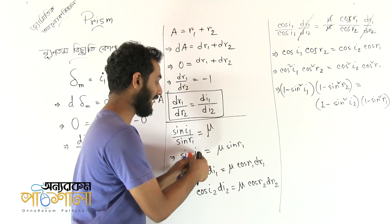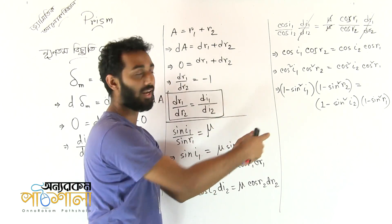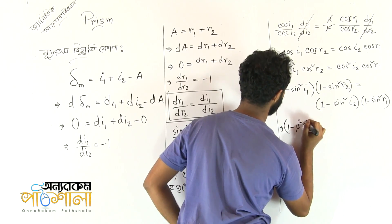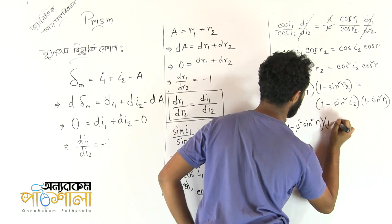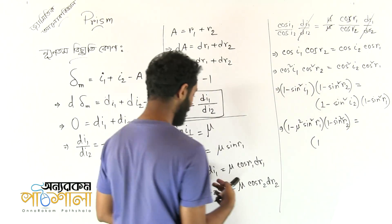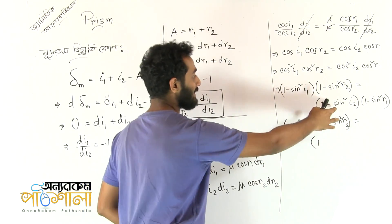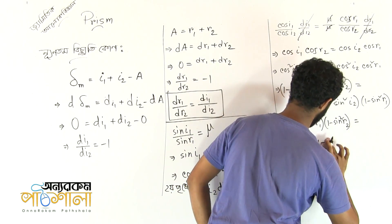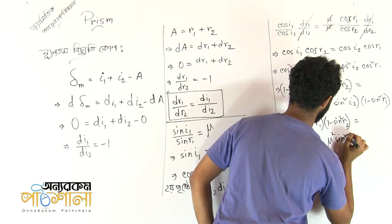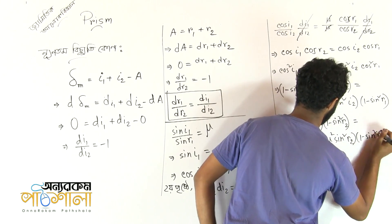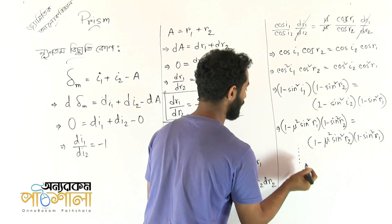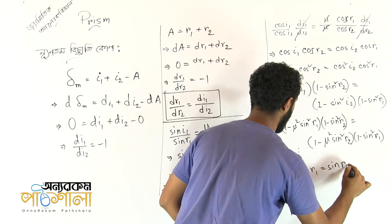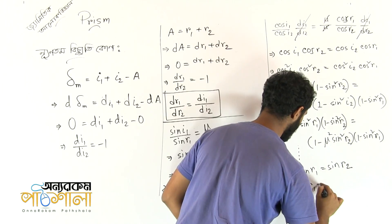So, sin²(i1) equals μ²·sin²(r1). Using this, the equation becomes: 1 minus μ²·sin²(r1) times 1 minus sin²(r2) equals 1 minus μ²·sin²(r2) times 1 minus sin²(r1), since sin(i2) equals μ·sin(r2). After normal algebraic calculation, sin(r1) equals sin(r2), meaning r1 equals r2.